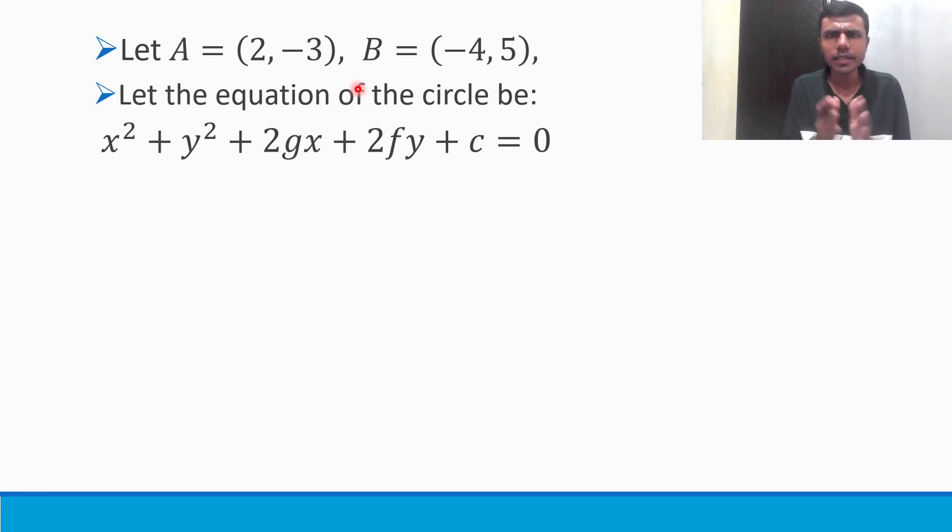Now how to do that? It is given that the circle passes through these two points A and B. That means these two points lie on the circle. That means these two points satisfy the equation of circle. So I can substitute the coordinates of A, then I can substitute the coordinates of B and I can get two equations.